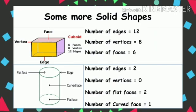First we are going to learn about the cuboid. A cuboid has 12 edges, 8 vertices, and 6 faces: the up face, down face, left face, right face, front face, and back face. There are four corners above and four corners below. In the picture you can count the edges: 1, 2, 3, 4, 5, 6, 7, 8, 9, 10, 11, 12 — there are 12 edges.